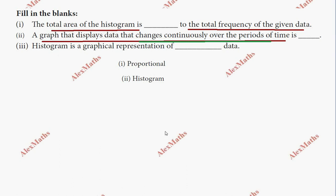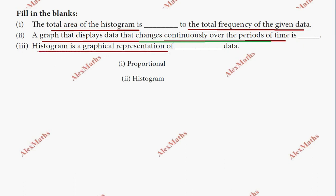The graph that displays data that changes continuously over a period of time is a histogram. A histogram is a graphical representation of data.